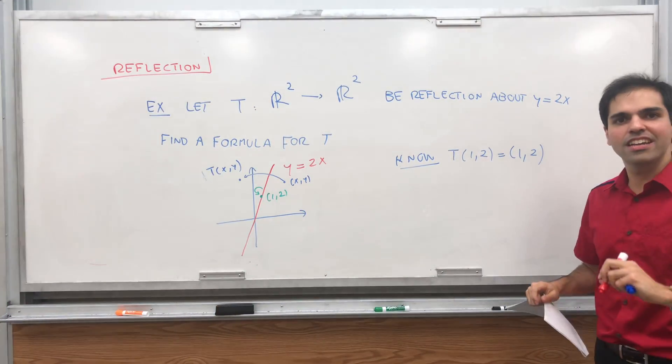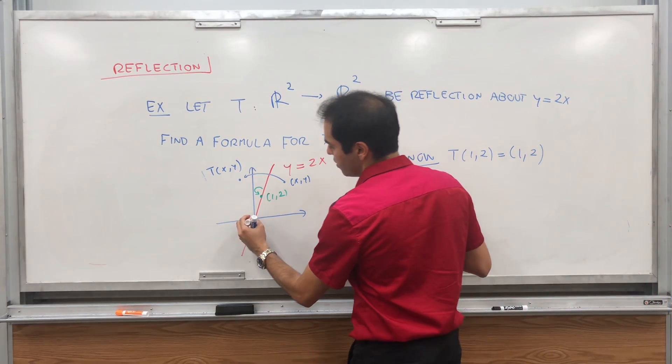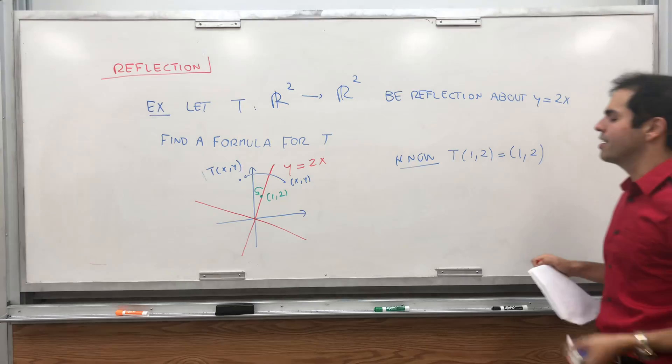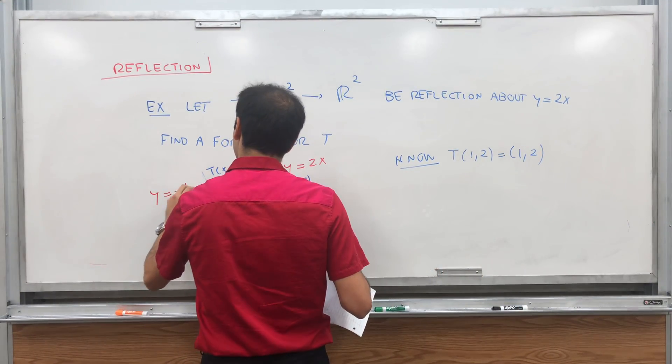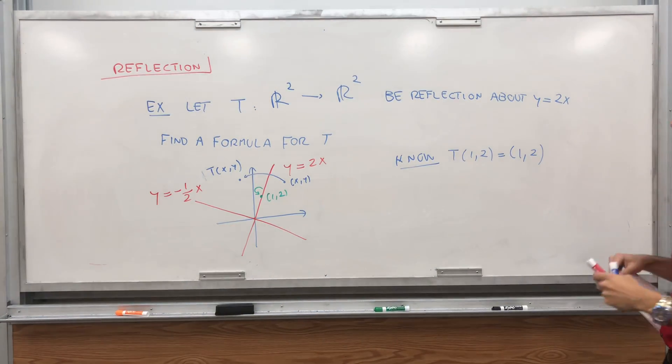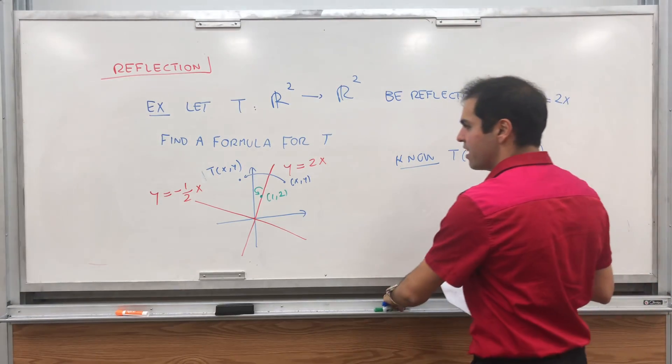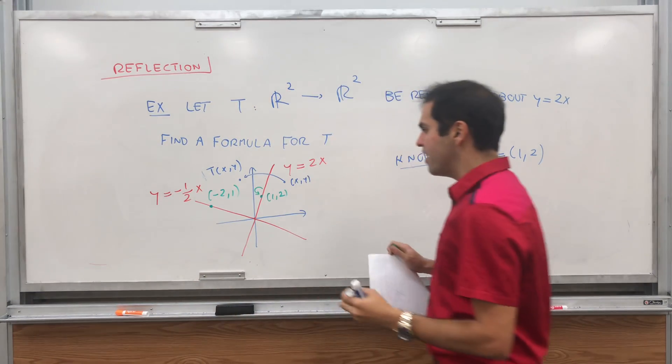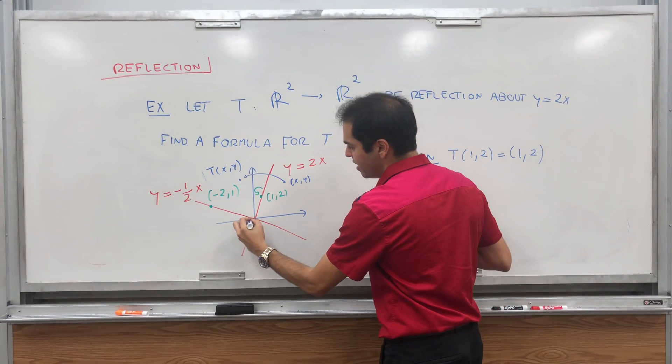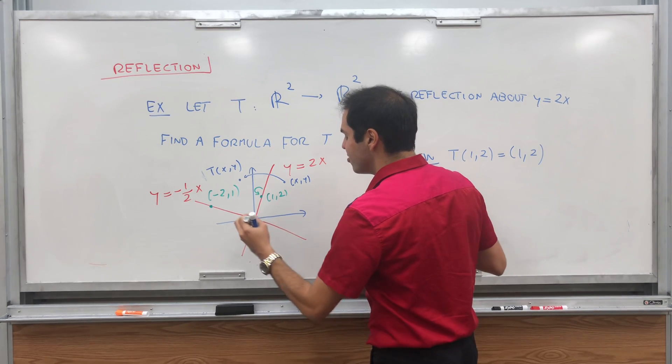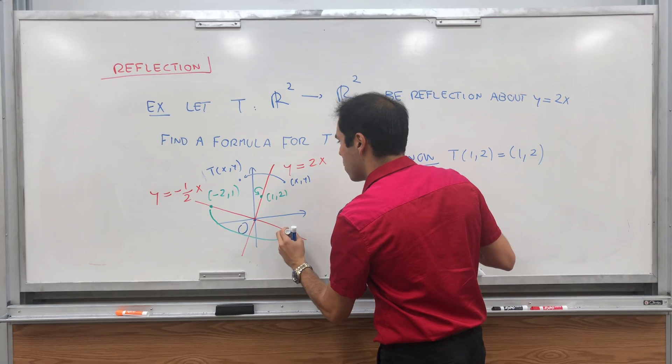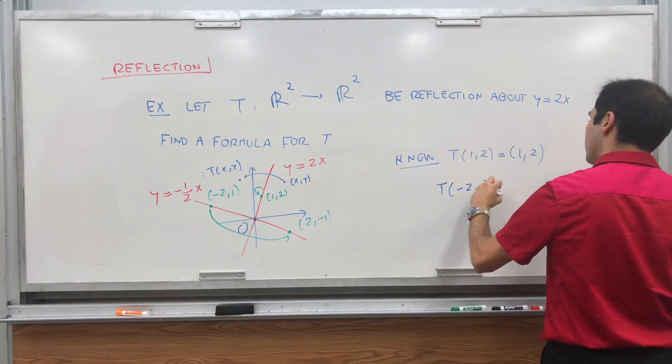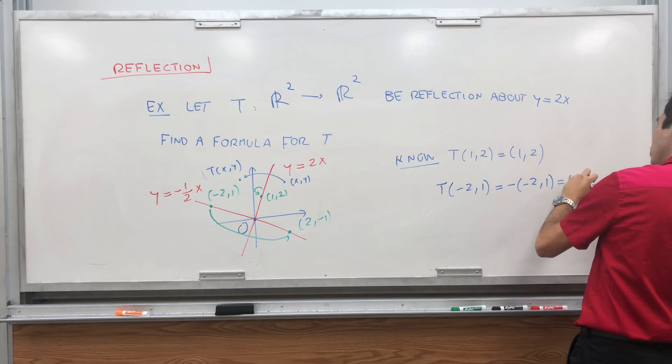If it reflects this point about this line, it just stays the same. So we know that T of (1,2) equals (1,2). That's one thing. And by the way, of course, we also know T of (2,4) is (2,4). But that's not very helpful because at the end, we want a basis. So somehow, we need to find another obvious point where we know what T does. Well, the nice thing about reflection is that it behaves very nicely with perpendicularity. So for example, you can consider this perpendicular line.